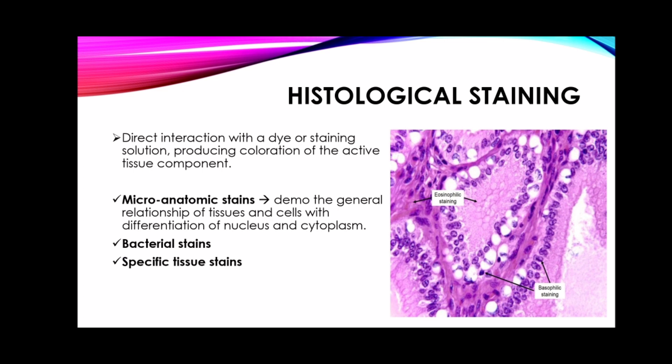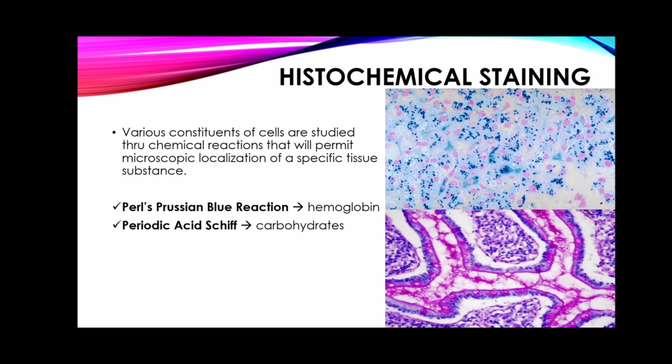Microanatomical or histological staining is used to demonstrate the general relationship of tissues and cells with differentiation of the nucleus and the cytoplasm. Next, we have histochemical staining or histochemistry — the process whereby various constituents of tissues are studied through chemical reactions that permit microscopic localization of a specific tissue substance. Examples include the Perls Prussian blue reaction for hemoglobin.